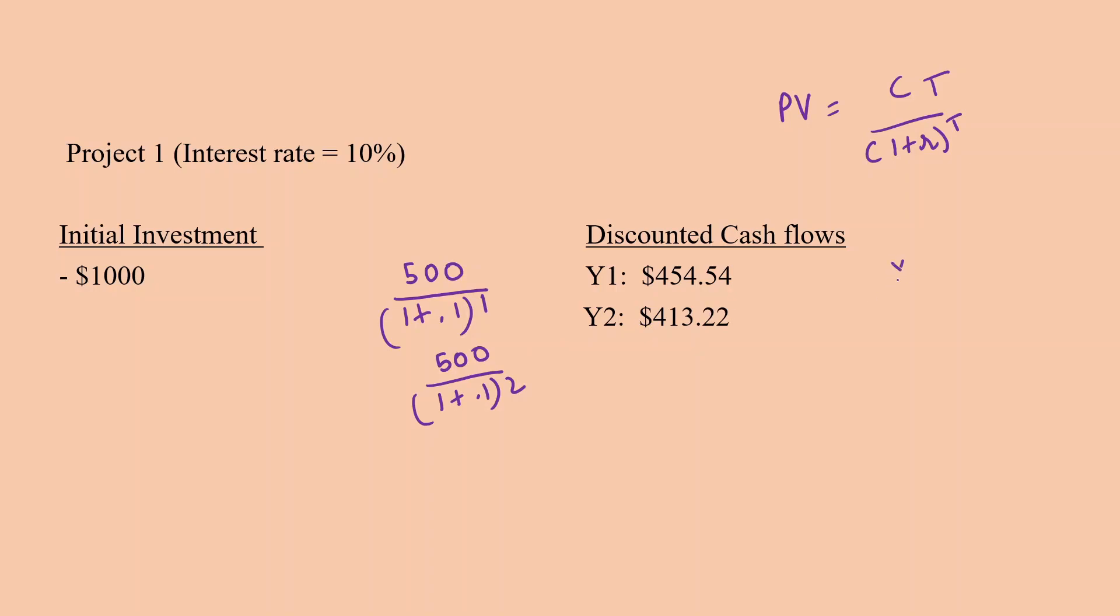And finally for year three, you have 500 divided by 1 plus 0.1 raised to the power 3, which turns out to be equal to $375.66.